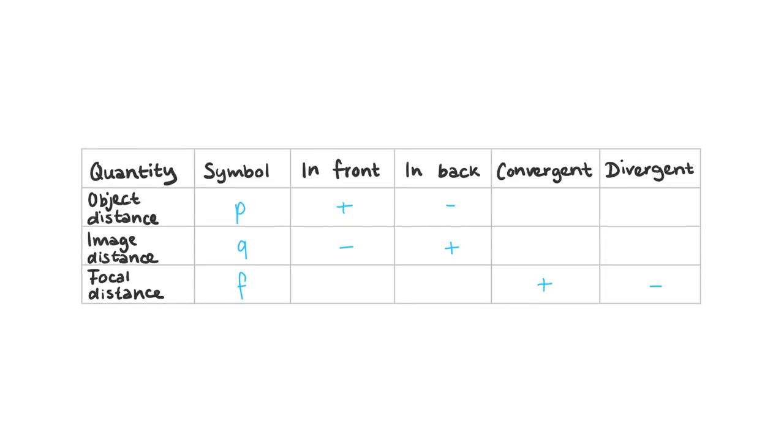You have to pay attention to the signs, though. Pause the video to then carefully study this table. Just by the symbol, we can say a lot about the positioning of the image and the type of lens already.